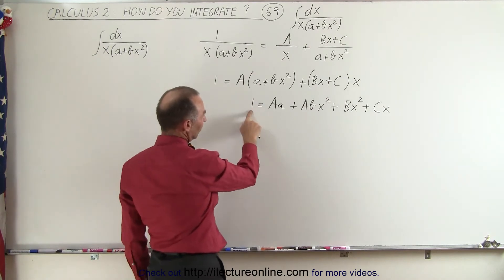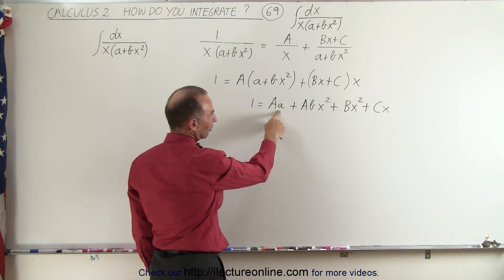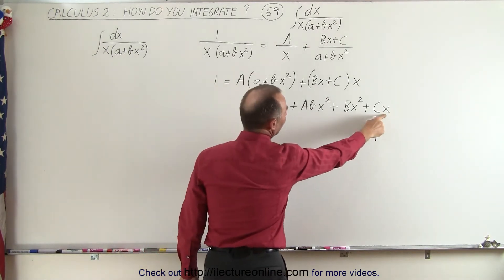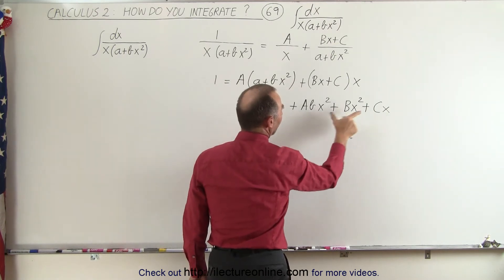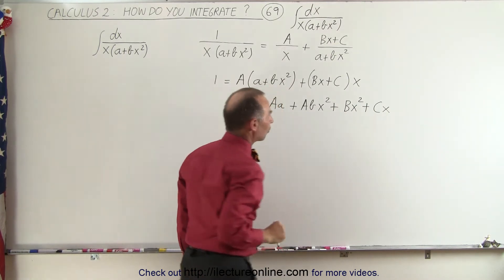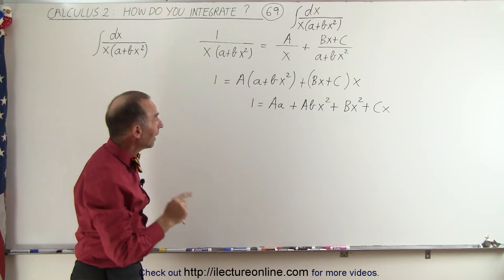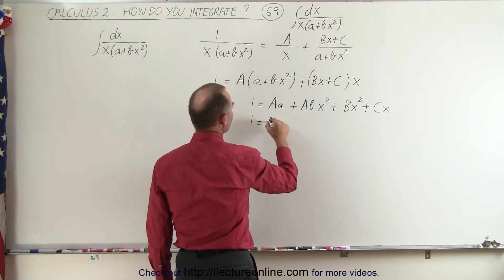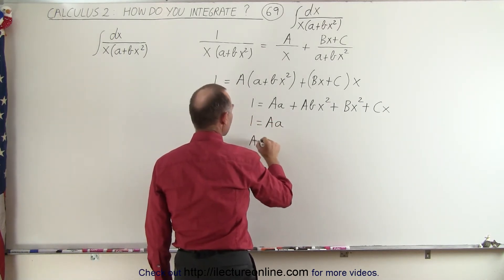So notice we have a constant on the left side. We have a constant on the right side. We have 1x to the first and 2x to the second terms. So let's go ahead then and say that 1 is going to be equal to a times a, which means a equals 1 over a. That was easy enough.